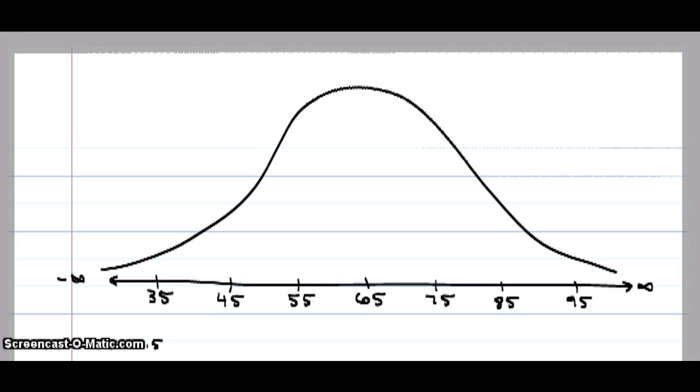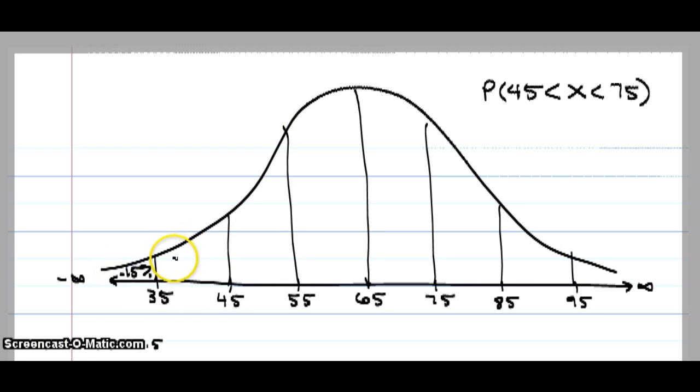Let's say we want to know the probability x lies between 45 and 75. Well, according to my empirical rule, I've got 0.15%, 2.35%, 13.5%.